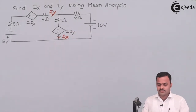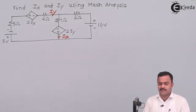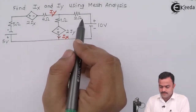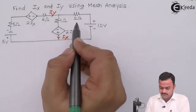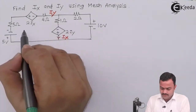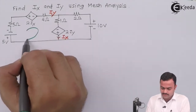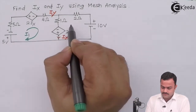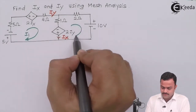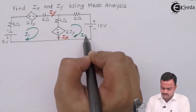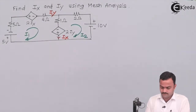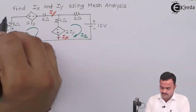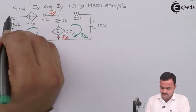Based on these currents, voltages are developed. Mesh one will have mesh current i1 giving rise to voltages across all the resistors of this polarity, similarly for mesh two and for mesh three also.